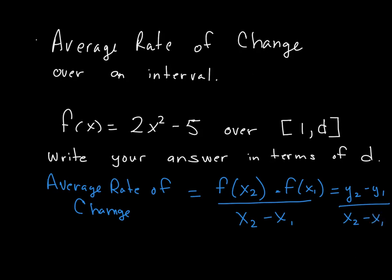Now when we label this, remember what we're doing here. This is our x1 and x2. x1 is the start of the interval, which is going to be our 1, and x2 is the end of our interval, which is d. Now to find f of x2 or f of x1, that means you have to take those values and substitute it into the function.